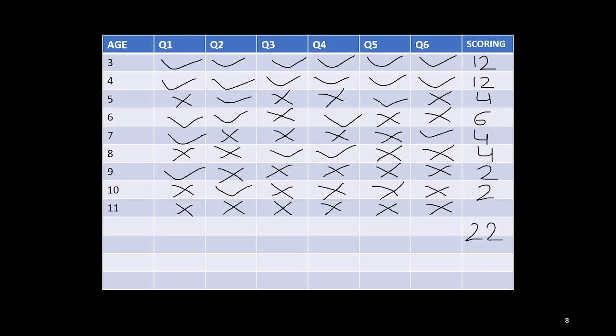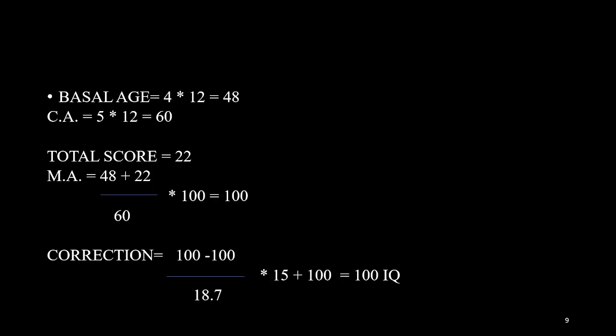Basal age was 4 years. For calculating basal age, 4 multiplied by 12 equals 48. Chronological age 5 into 12 equals 60. We need to convert years to months by multiplying 12. Total score was 22 months. Mental age would be 48 plus 22 divided by 60 into 100, so it would be 100.